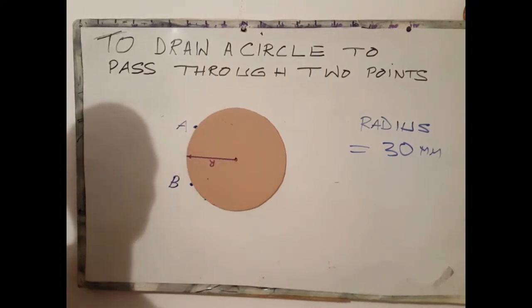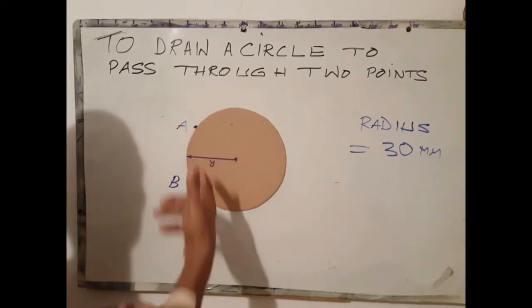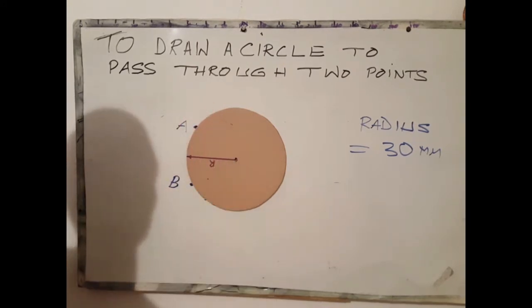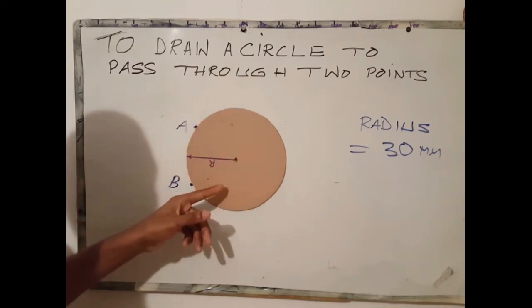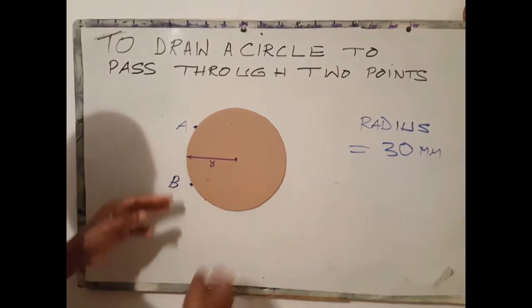It means therefore to find this center all we need to do is open our compass to the radius of the circle that we wish to blend with both. Pass through both points using A as center, square an arc. Using the same radius at B, square an arc. At the point where both arcs meet is our center.